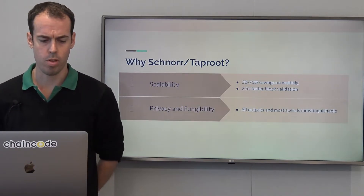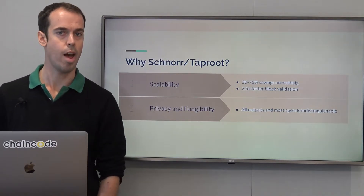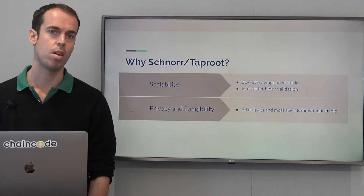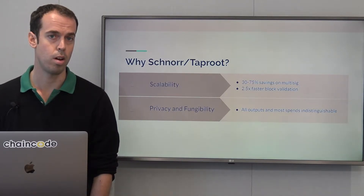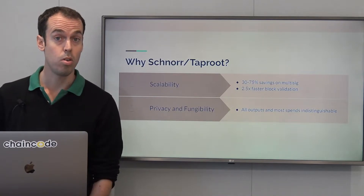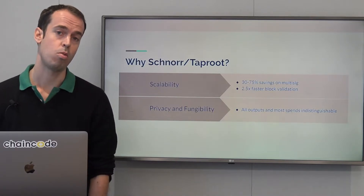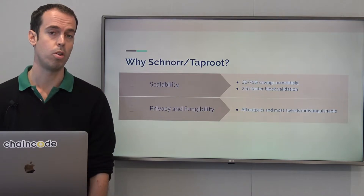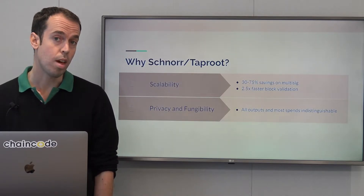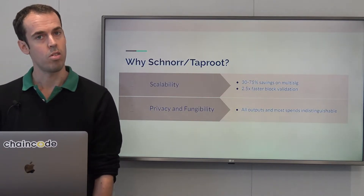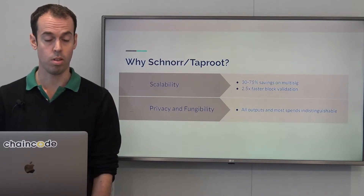Schnorr Taproot is also great for privacy and fungibility for exactly the same reasons. Because a multi-signature, an aggregate or threshold signature looks exactly the same as a single signature, it's impossible for anyone watching the network to know whether a transaction was signed by one person, multiple people, or a threshold of people. In most cases, the scripts encumbering a transaction will not be revealed because the key path will be used, and that is good for privacy. Advanced transactions like lightning channel opens and closes or advanced contracts will look exactly the same as a pay-to-single-signature.